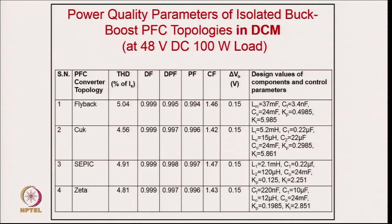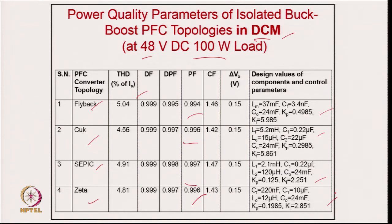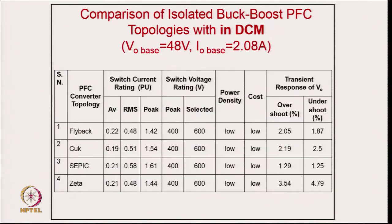For DCM design of all four converters — flyback, CUK, SEPIC, Zeta — at 100 watts and 48 volts output, THD is less than 5 percent and power factor is close to unity in all four cases. Component values and control gains are provided; in DCM the two input sensors for voltage and current sensing are eliminated.